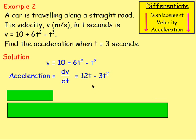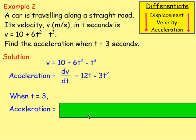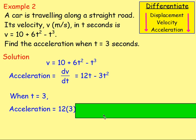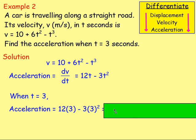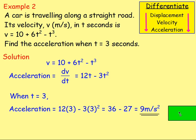That is an expression for the acceleration, but you are asked to find the acceleration when t = 3. So when t = 3, replace t with 3. The acceleration = 12 × 3 − 3 × 3², which is 36 − 27, which gives 9 metres per second per second.